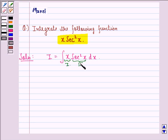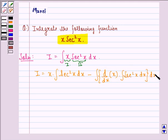Now we will integrate it by parts. So I will be equal to first function, that is x, into integral of second function, that is secant square x dx, minus integral of d by dx of first function, that is x, into integral of secant square x dx, into dx.